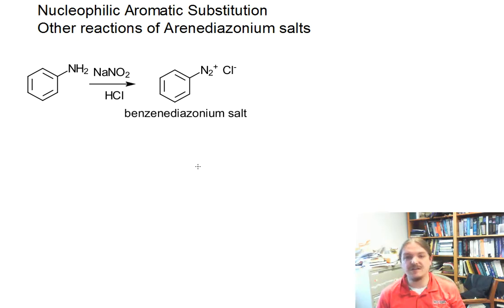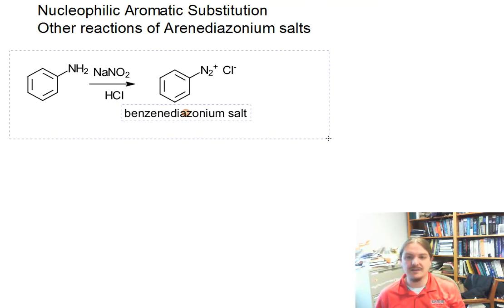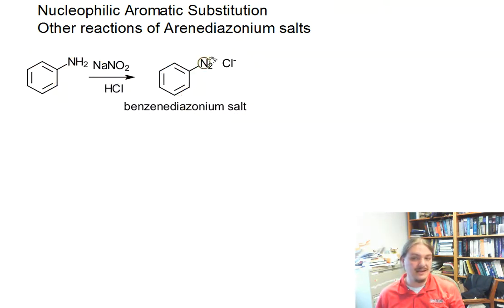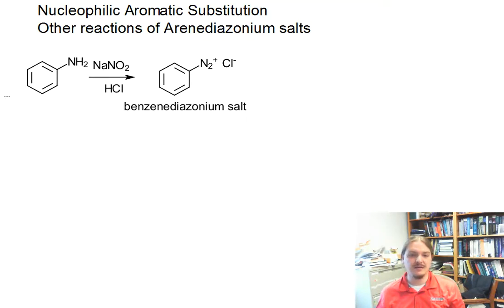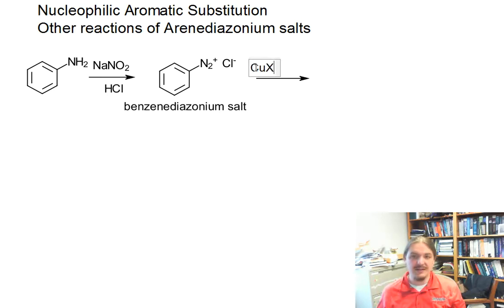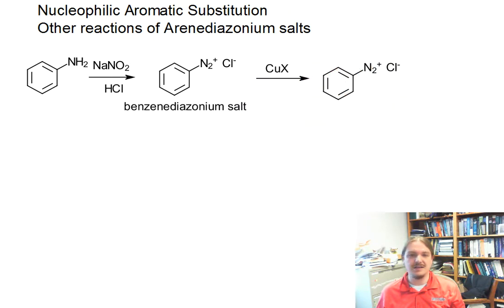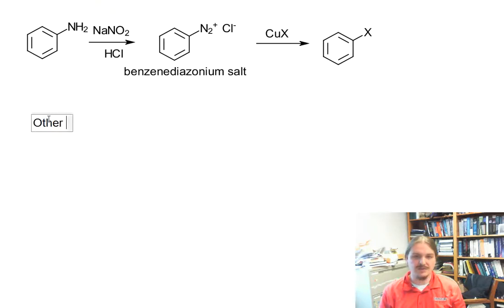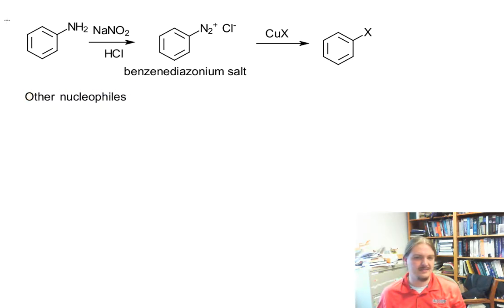In this video, I'm going to talk about other reactions of arene diazonium salts as electrophiles. In the previous video, I shared that anilines undergo a reaction with sodium nitrite and hydrochloric acid to form these arene benzene diazonium salts, and in the Sandmeyer reaction, they react with various copper nucleophiles like copper halides, copper cyanide — generally copper(I) salts — to substitute the diazonium group for whatever that X nucleophile is. In this video, I'm going to talk about some other nucleophiles and successes and failures with them.